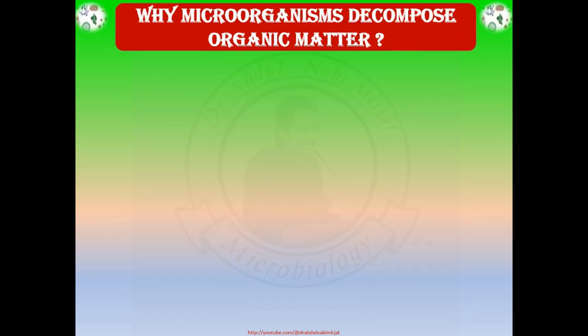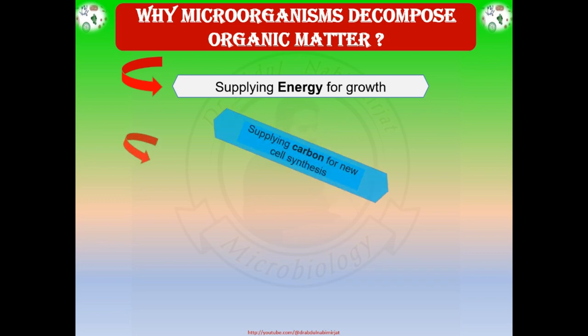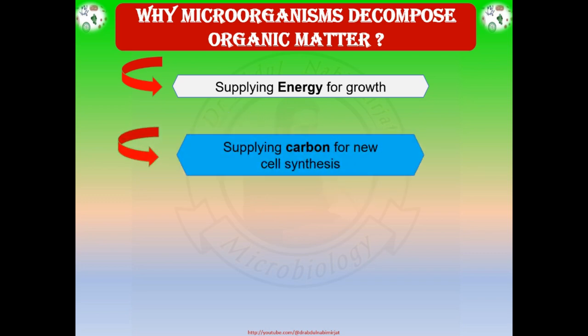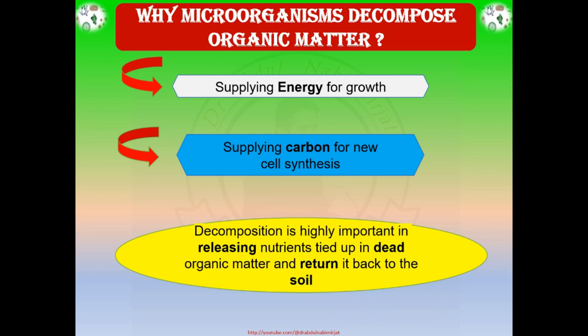Why do microorganisms decompose organic matter? Microorganisms decompose organic matter for the purpose of supplying energy for growth and supplying carbon for new cell synthesis. Cells of most microorganisms commonly contain approximately 50% carbon, derived mainly from organic substances. Why do we care about decomposition? Decomposition is highly important in releasing nutrients tied up in dead organic matter and returning them back to the soil.